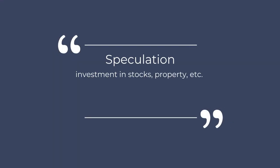That brings us to the third thing that was going on during the 1920s that would lead to its downfall, and that was speculation. Speculation is when somebody invests in stocks, properties, or other things in the hope of gaining profit, but there is the risk of possibly losing everything.